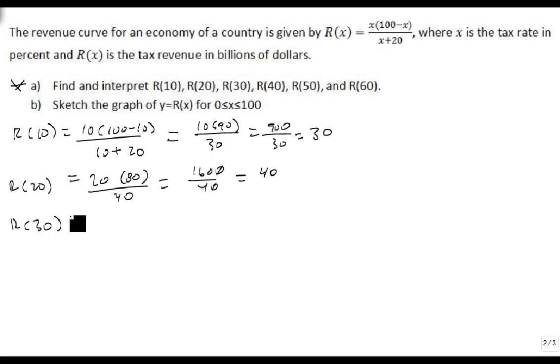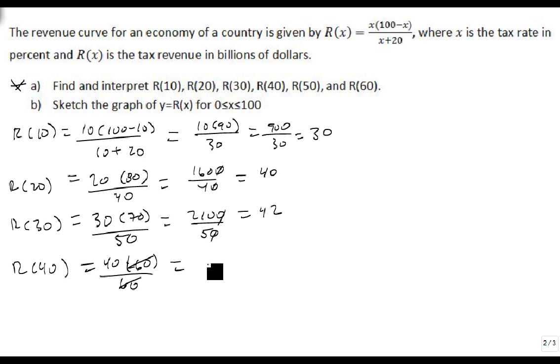R(30) is 30 times 70 over 50, which is 2100 over 50, which is 42. Notice it's not going up quite as fast. R(40) is 40 times 60 over 60. Well, that's only 40 because the 60s divide out.